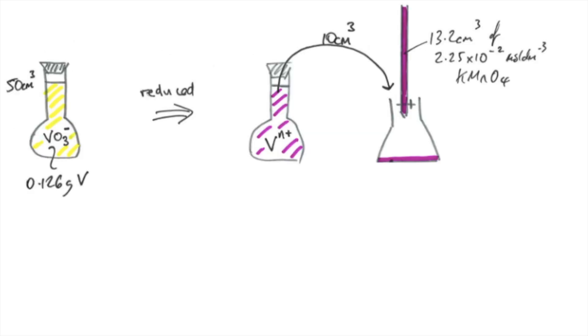So as you know, I'm a fan of these diagrams, just to try and help visualize what's going on in the question. So they've taken some vanadium, and they've dissolved it in acid, and it's turned the V into VO3 minus.